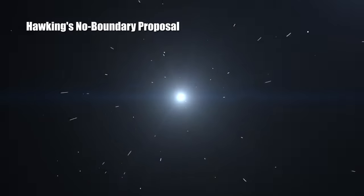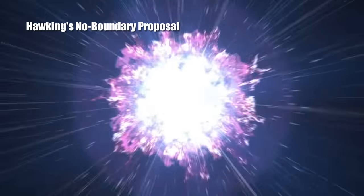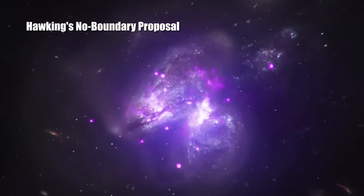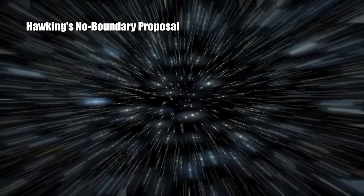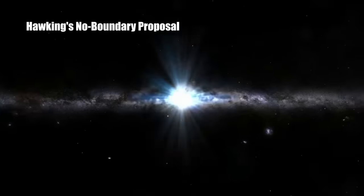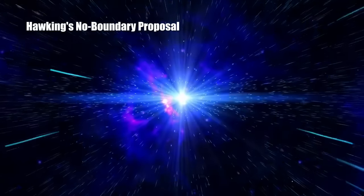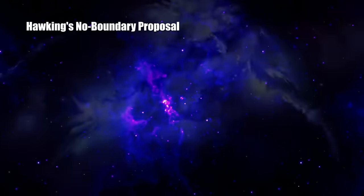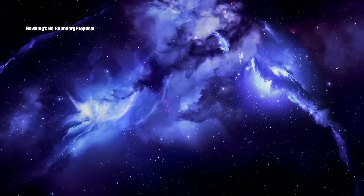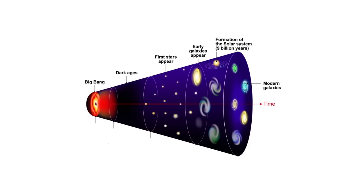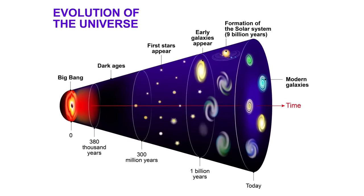According to this model, the universe has no origin as we would understand it. Before the big bang, which happened about 13.8 billion years ago, the universe was a singularity in both space and time. Hawking suggested that if we could travel backwards in time towards the beginning of the universe, we would note that quite near what might have been the beginning, time gives way to space so that there is only space and no time. As Hawking himself explained, asking what happened before the big bang is meaningless because time as we understand it did not exist before the expansion.